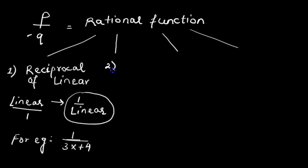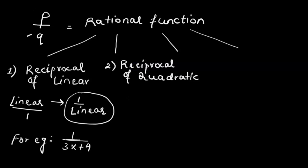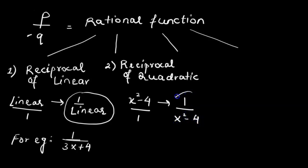Second, we have the reciprocal of a quadratic function. If we have a quadratic function, for example x squared minus 4 — which means x squared minus 4 over 1 — when we reciprocate it, it becomes 1 over x squared minus 4. So this is an example of a rational function.